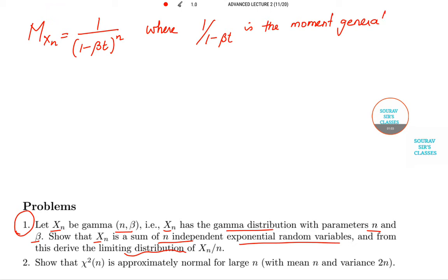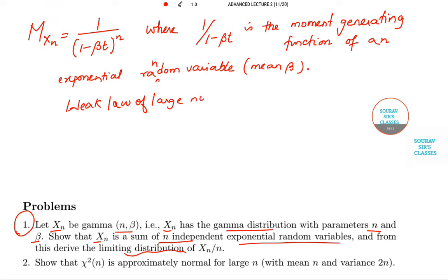So random variable which has a mean beta. So by the application of weak law of large numbers, we can say that Xn by n tends to beta.